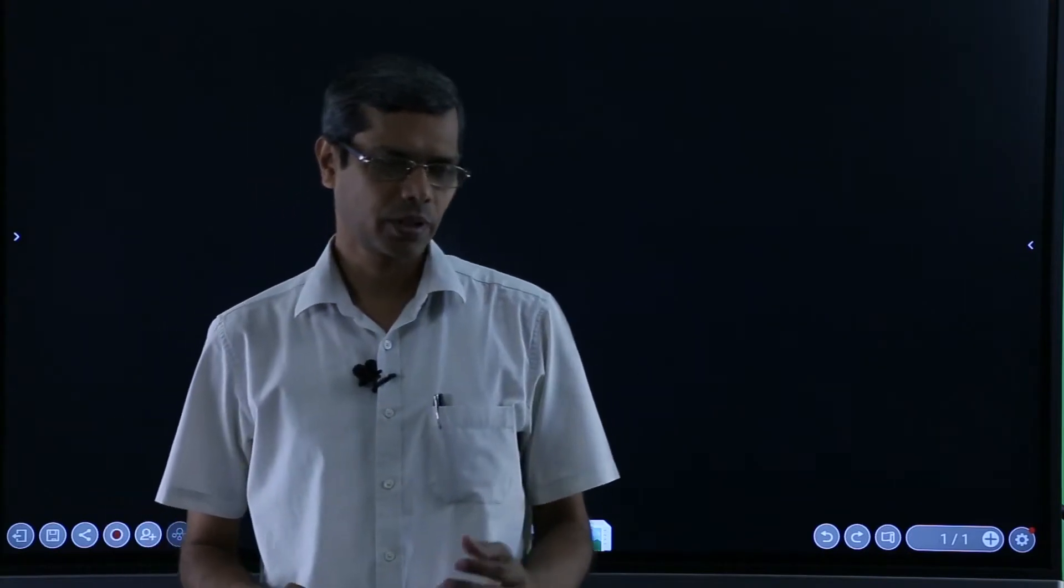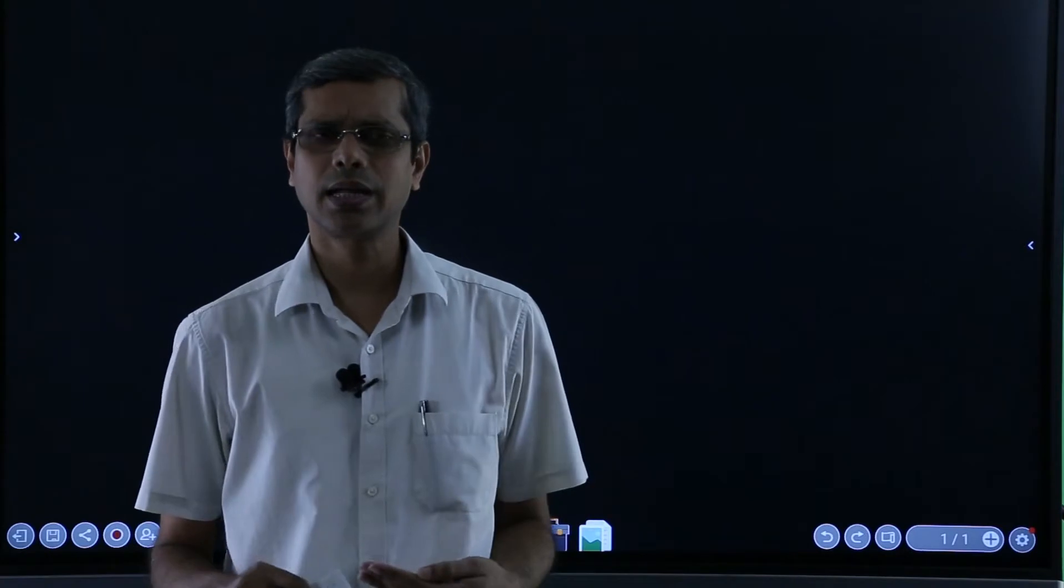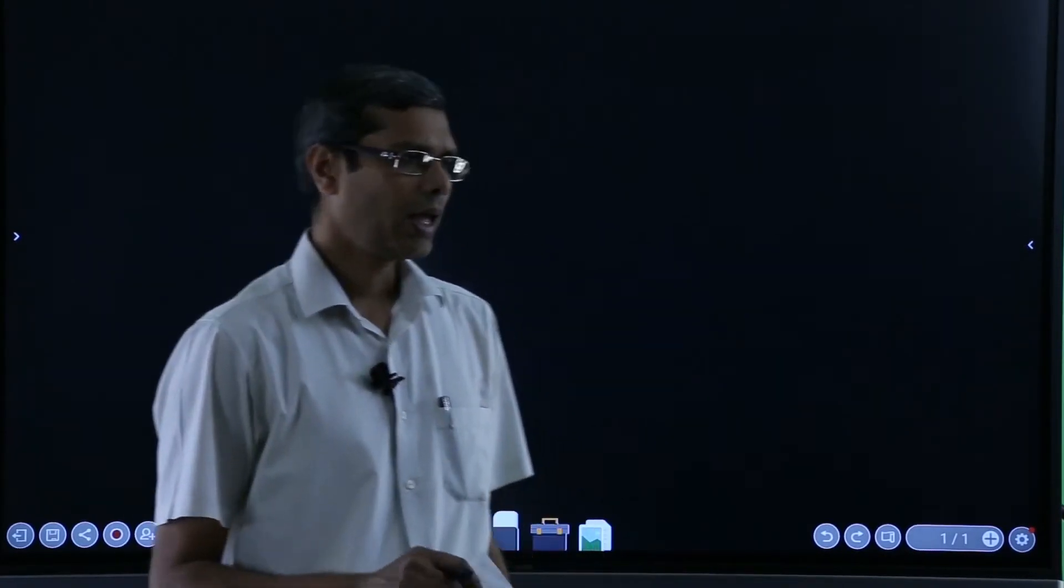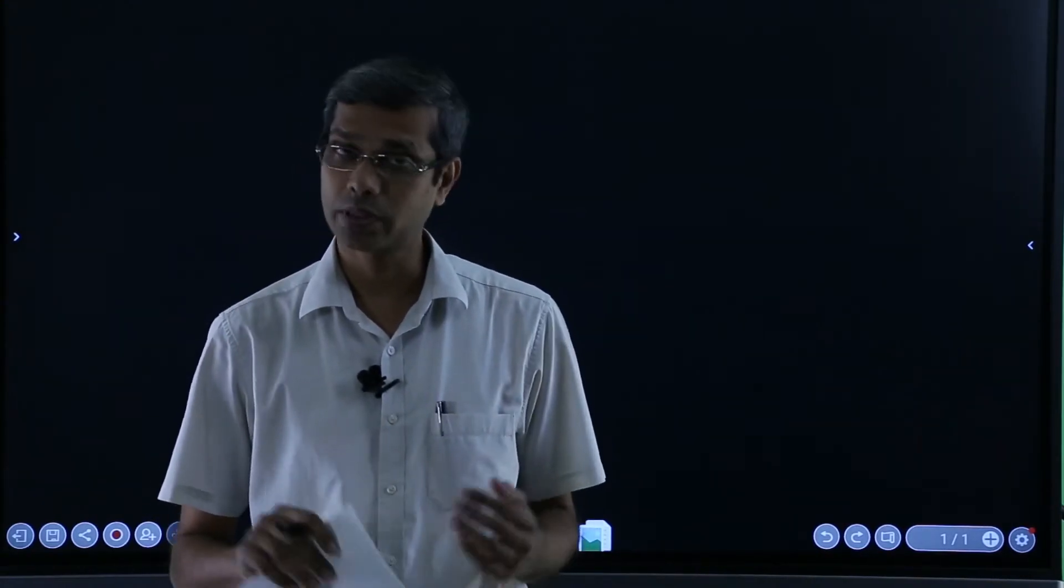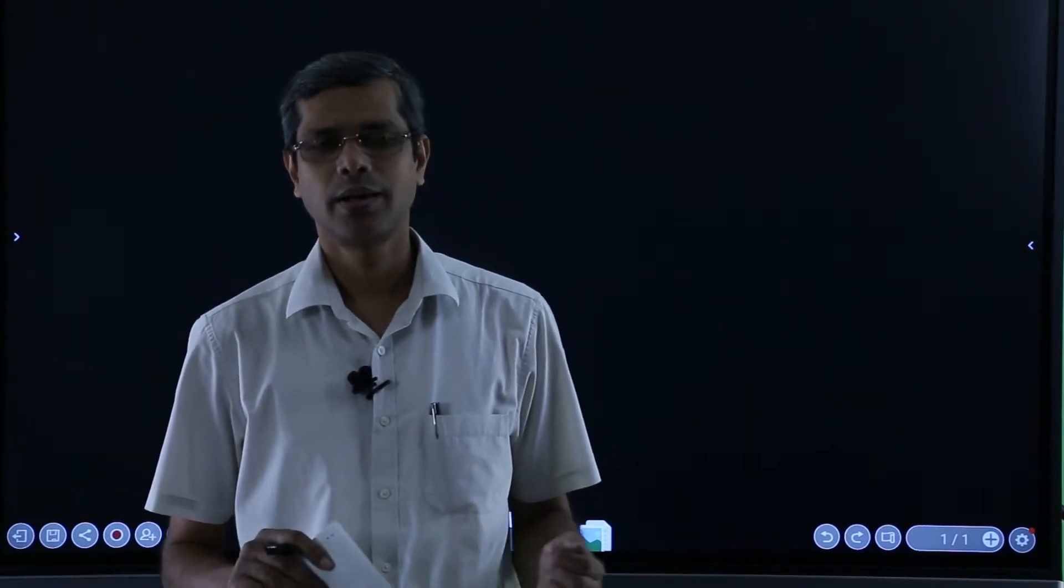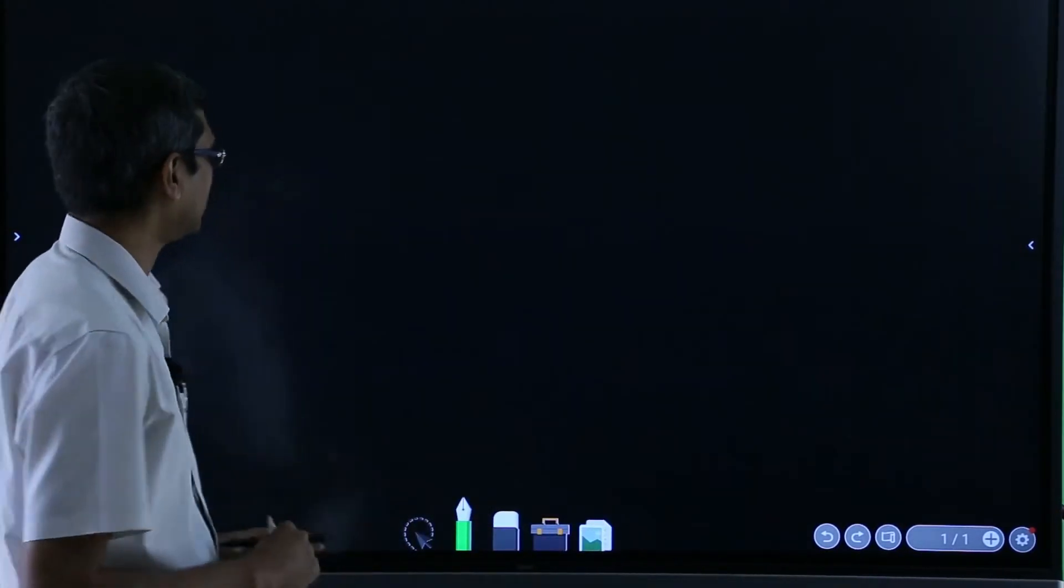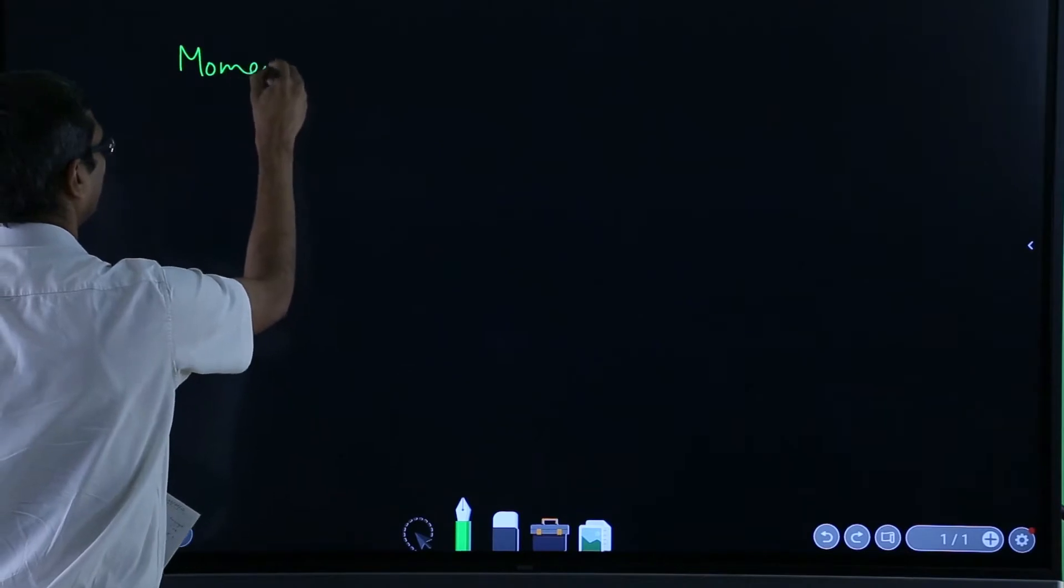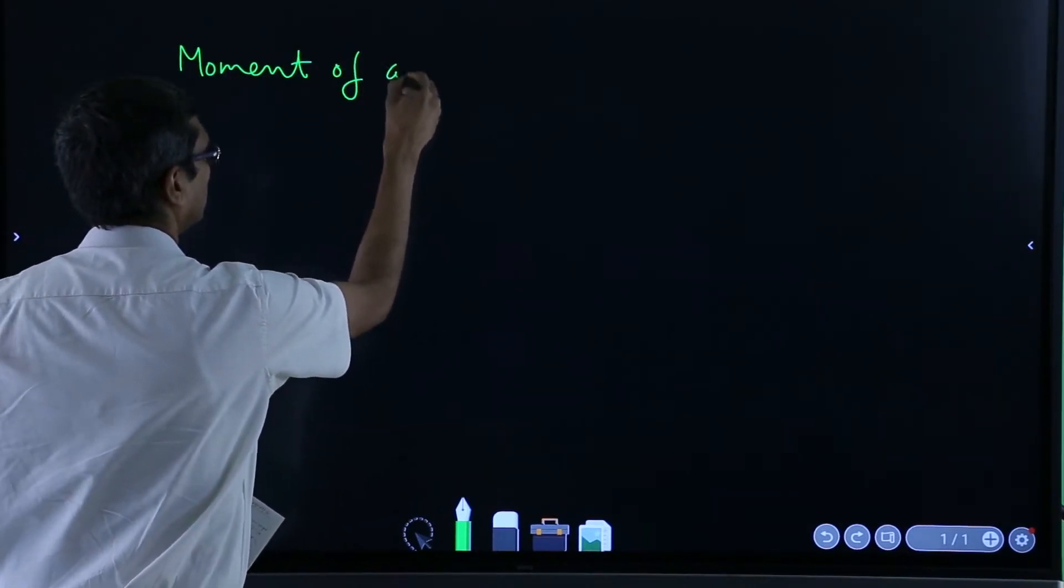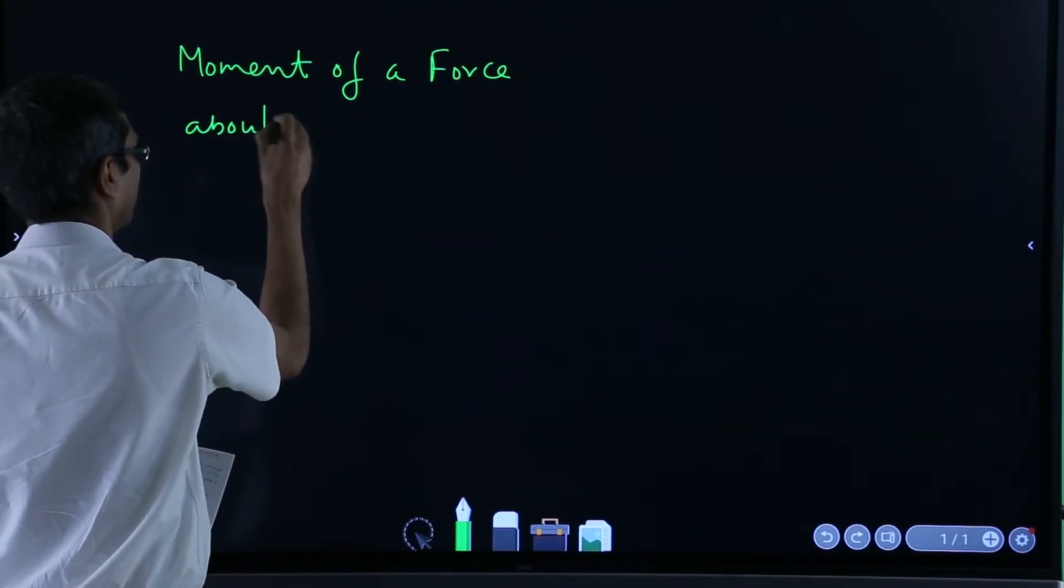In the last segment we have seen three basic vectors: unit vector, position vector, and displacement vector - how to evaluate and how to use them. Now in this segment we will see some special vectors which are also basic building blocks which will help us in solving difficult problems - the moment of a force about a point.